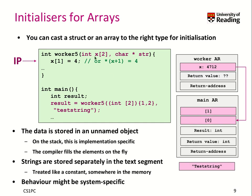Now if worker 5 needs an array of two elements, we can take this temporary object basically as an argument, and then this array will point to this unnamed object inside main.